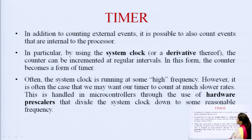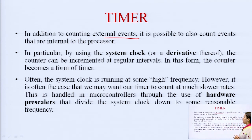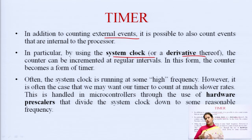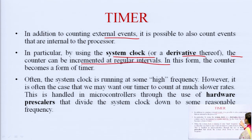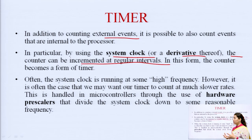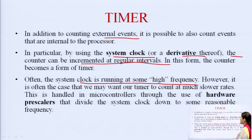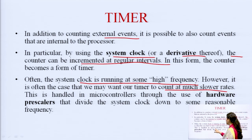In addition to counting external events, it is possible to also count events that are internal to the processor — particularly by using the system clock or its derivative. If the system clock is of higher frequency and we want a lower frequency clock, we can use pre-scalers; those derived frequencies are known as derivatives. The counter can be incremented at regular intervals, and in this form the counter becomes a timer. Often the system clock runs at a high frequency, and hardware pre-scalers divide it down to some reasonable frequency.